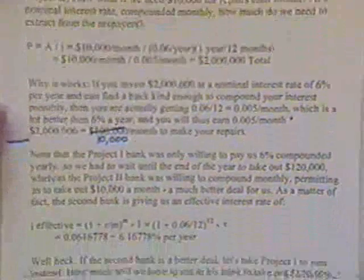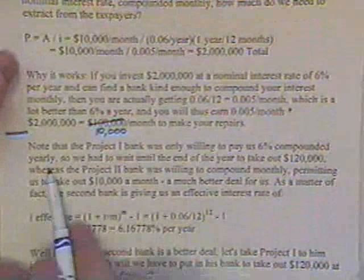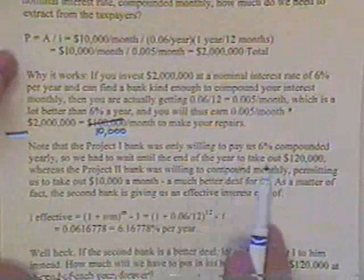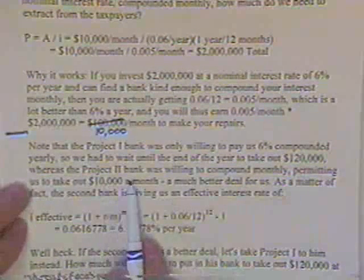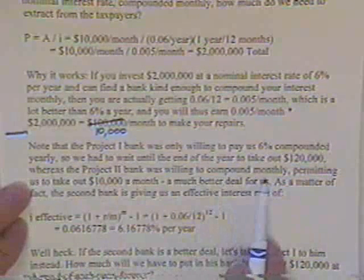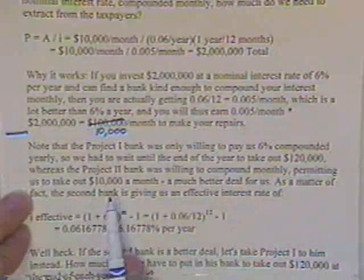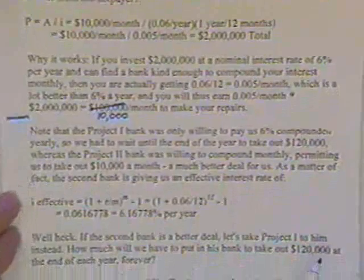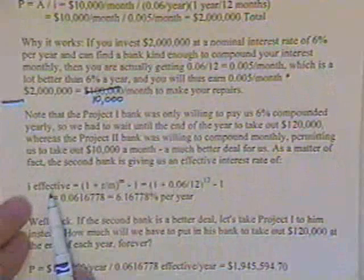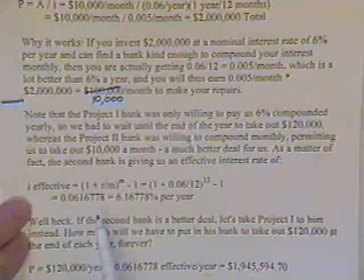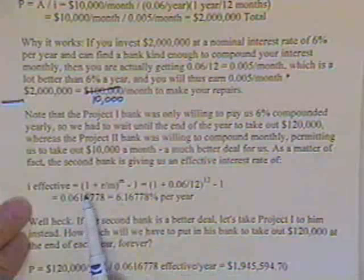Now, the Project 1 bank was only willing to pay us 6% compounded yearly, so that's how we had to wait until the end of the year, that's why we did that, to get our money. The Project 2 bank is a nicer bank. They're willing to compound monthly, letting us take out $10,000 each month. That's a better deal. As a matter of fact, the second bank is giving us an effective interest rate, which we can find right out of the tables, right out of the equations, right out of the book. Reference manual.